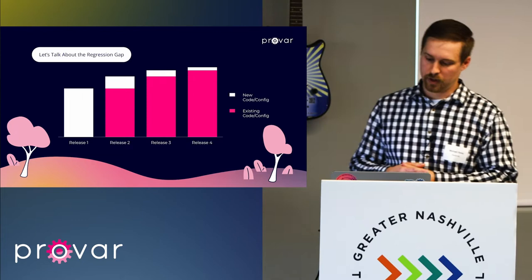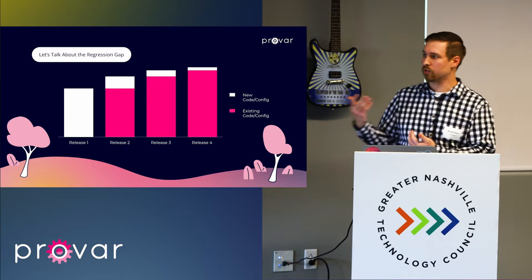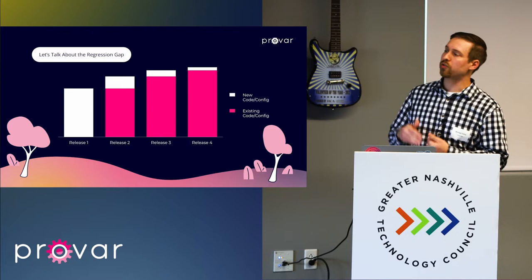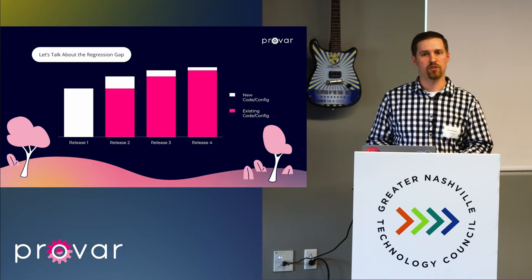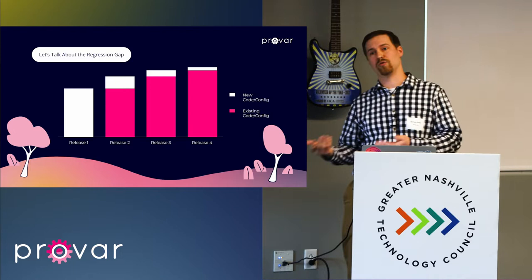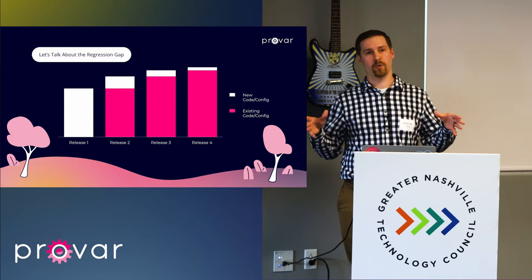Regression testing is the process of testing something that has already been tested. The regression suite is completely new in its initial phase — if you look at release one, everything is new. The next release is when you have mostly something that's already been in the code base, and you're building on top of what's already there. But as each release comes out, the need to test those changes doesn't change. You need to continually test things that have already been tested because as you introduce new features, you need to make sure you're not breaking anything existing. That scope gap is the regression gap.